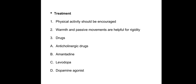Sometimes levodopa is given with carbidopa, which inhibits the enzyme responsible for breakdown of levodopa to dopamine peripherally, diminishing the peripheral breakdown. However, this combination cannot prevent the development of the on-off phenomenon. In a fixed ratio, carbidopa and levodopa may be given; start with a small dose and gradually increase depending on the improvement. Levodopa should not be given in patients with psychiatric disorders or narrow-angle glaucoma.